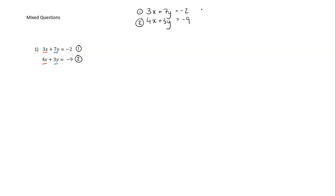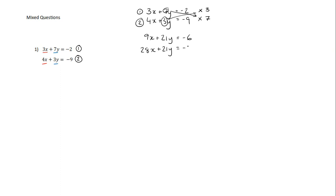In order to get one of my variables to be the same, I'm going to choose to get rid of the y. So I'm going to multiply equation 1 by 3 and equation 2 by 7. So I've got 3 times 3x giving me 9x plus 21y equals negative 6, and 28x plus 21y equals negative 63. I'll label these 3 and 4.